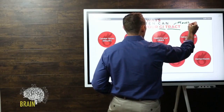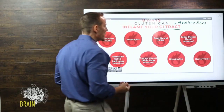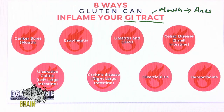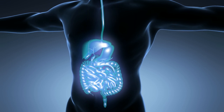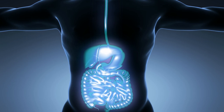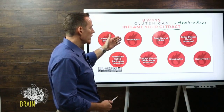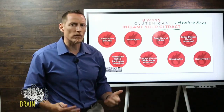The GI tract is the tube that runs through your body from your mouth to your anus. A lot of people think of it as isolated to the small intestine or stomach, but it runs all the way from your mouth to your anus. Anywhere along that route we can see inflammation, and we want to understand why. These are the eight ways we are absolutely certain that gluten can create an inflammatory process that can damage the GI tract.